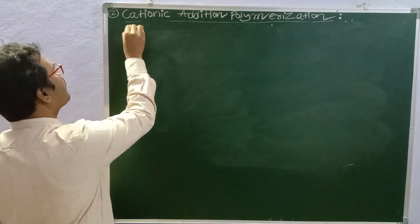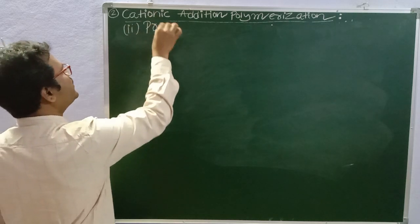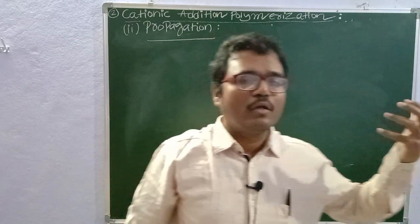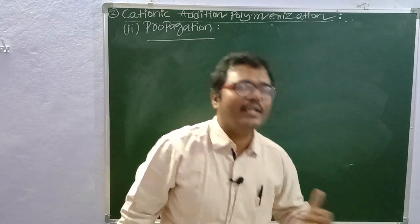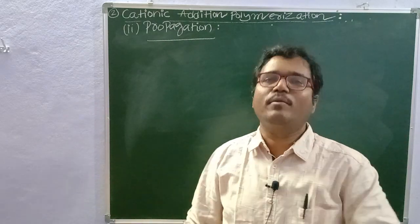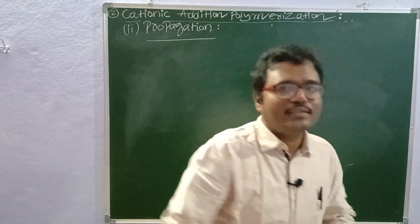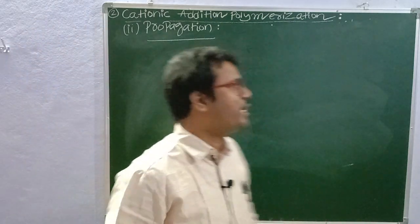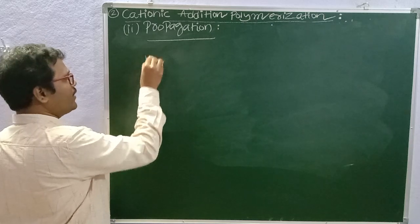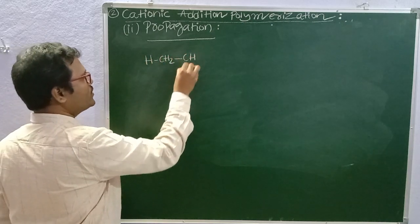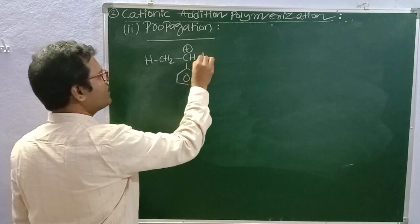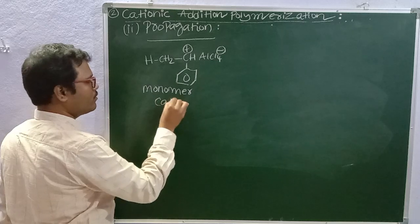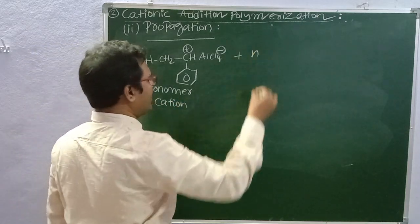Step number two is called propagation. In propagation, the monomer cation produced in initiation will have many styrene monomers added to it. So we take the monomer cation plus N times styrene monomers (CH2=CH with benzene ring).